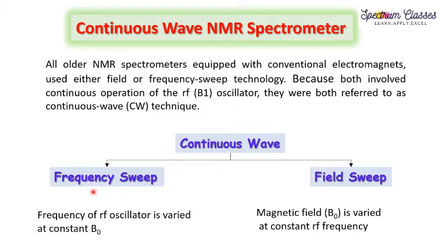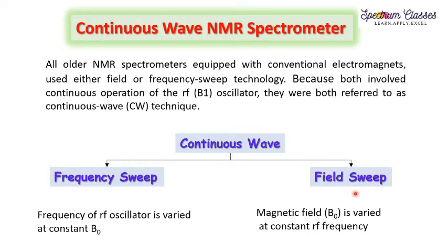As the name suggests, frequency sweep means varying the frequency. The RF oscillator frequency is continuously changing at a constant field value, that is, at constant B0. Whereas in the field sweep, the B0 field or the magnetic field is varied at a constant frequency of the RF oscillator.